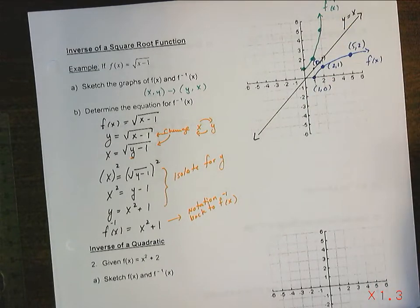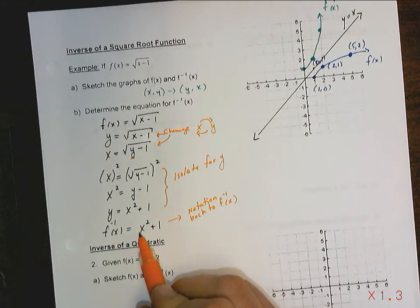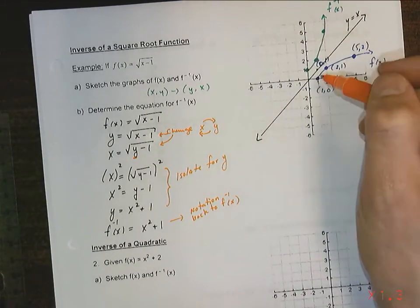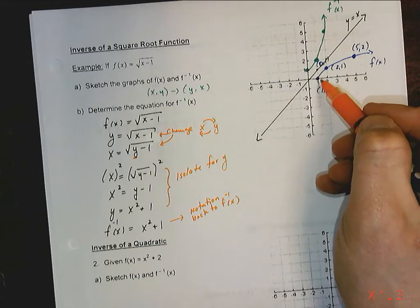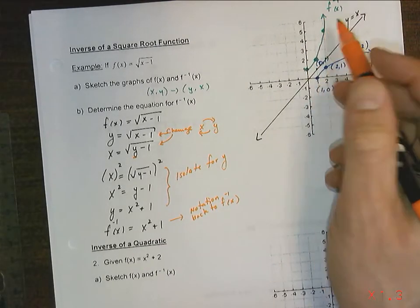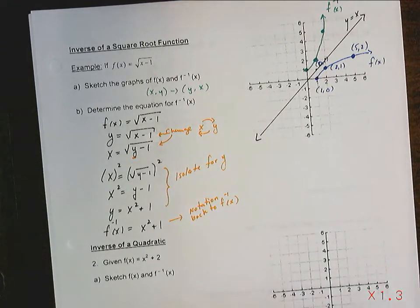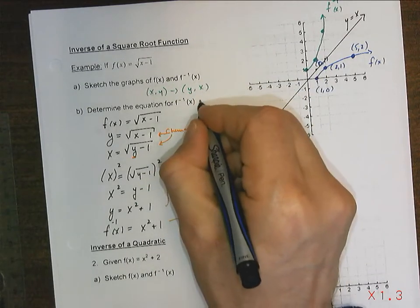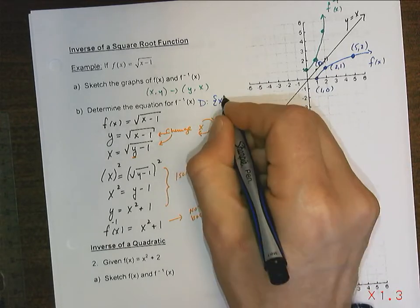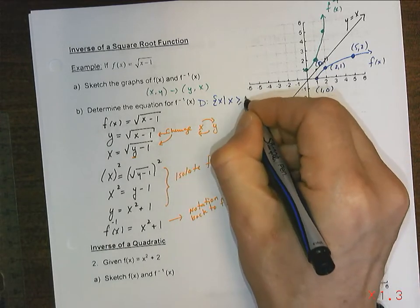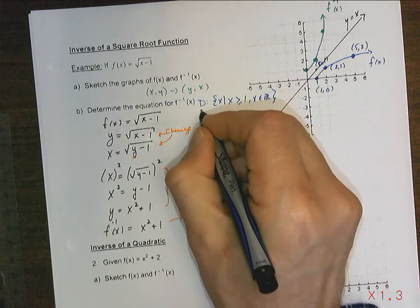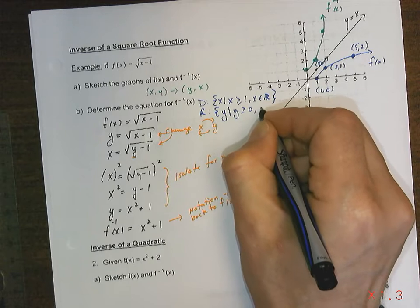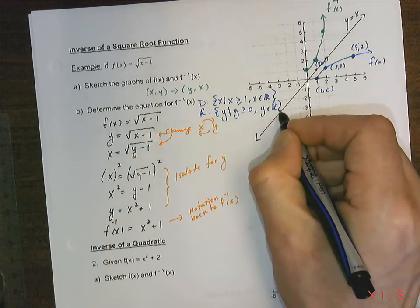Now, some of you should be looking at that and saying: this is a parabola — a parabola shifted up one unit. It should have two sides to it, and it obviously doesn't. That's because the reflection of the original f(x) only has one arm. So we need to talk about the domain and range of the original function. The original function has a domain of x ≥ 1, and a range of y ≥ 0.